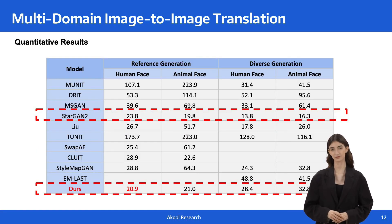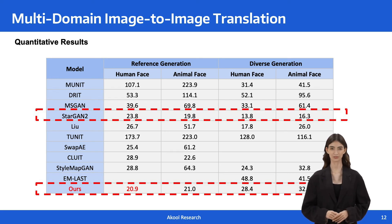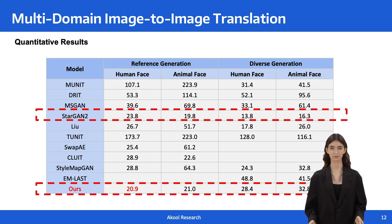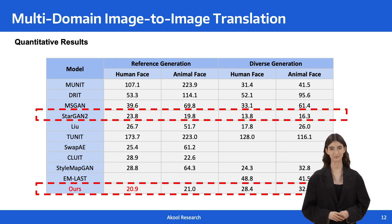This table presents a comparison of different models for image-to-image translation in terms of FID. A lower FID indicates better quality translated images. The model is comparable to the adversarial training framework, such as StarGAN2.